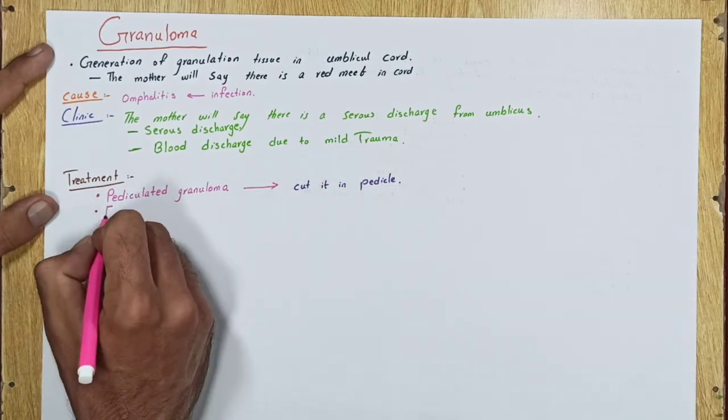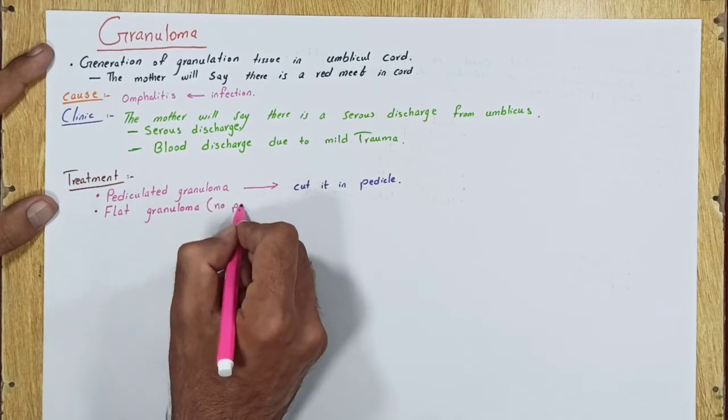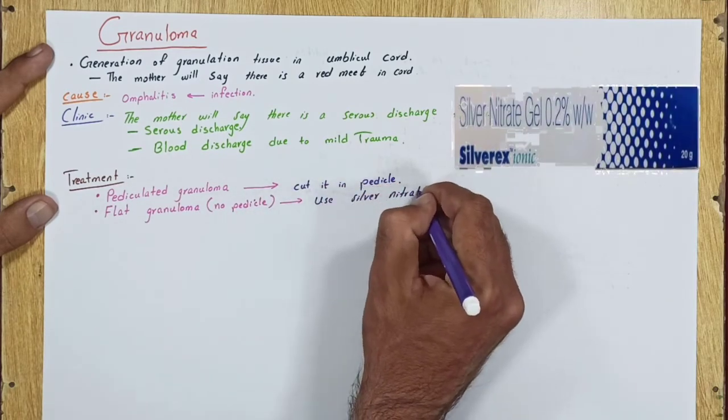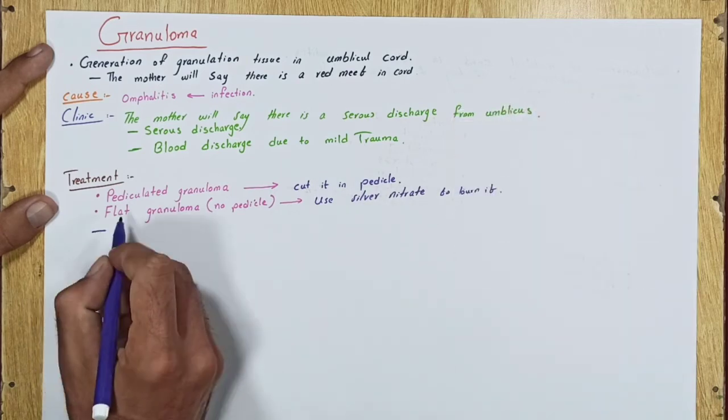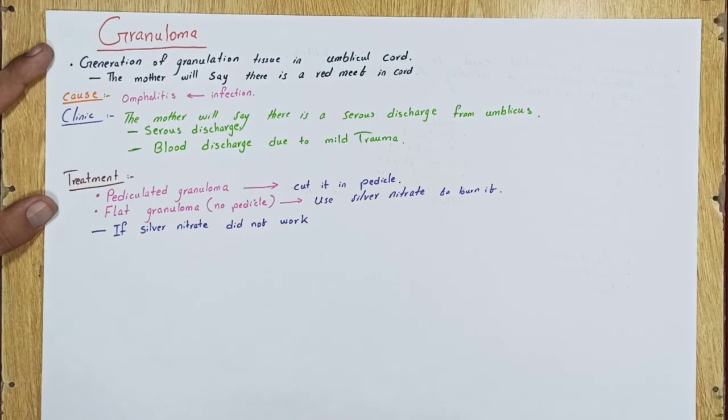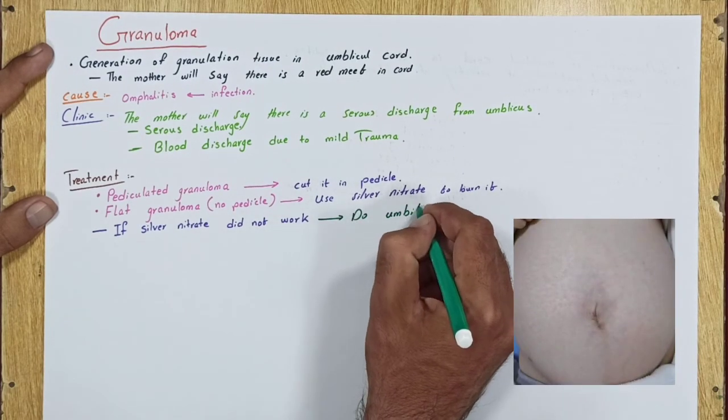If the granuloma is flat, meaning there is no pedicle, we use silver nitrate. If silver nitrate does not work, we do umbilictomy.